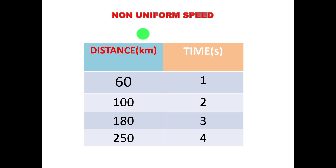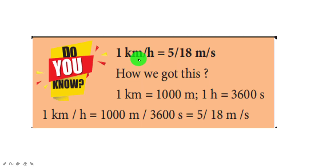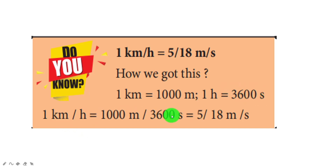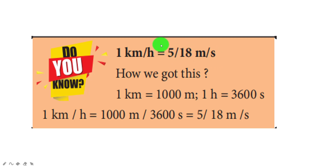To convert km per hour into meter per second, we use the factor 5/18. This is because 1 km equals 1000 meters and 1 hour equals 3600 seconds, so 1 km/hr equals 1000/3600, which simplifies to 5/18. To convert km/hr to m/s, simply multiply the value by 5/18.